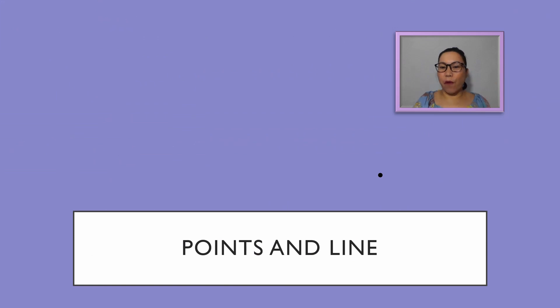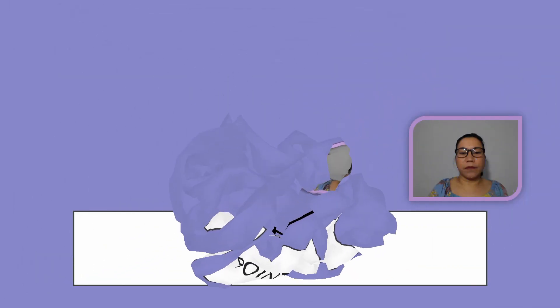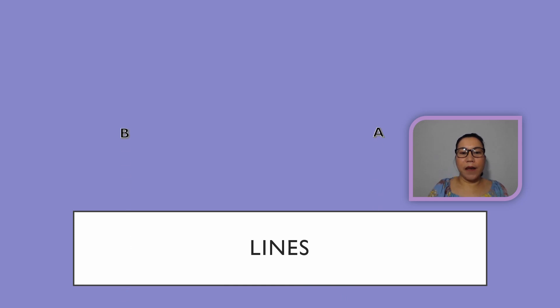I have point A and I have point B and if you connect those two points, you have a straight line or a line. Now I have line AB. And I have another line. I will name this line CD.